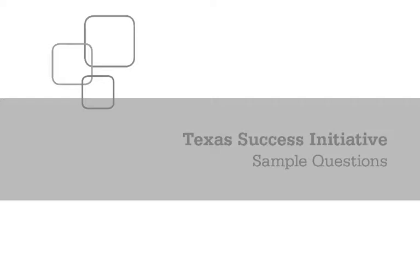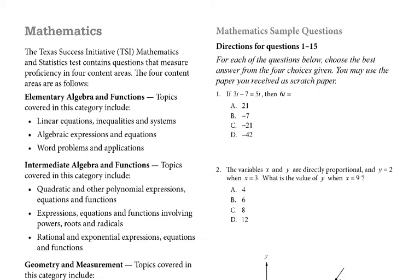This video is about TSI sample questions from College Board. For question number one: if 3t minus 7 equals 5t, then 6t equals?